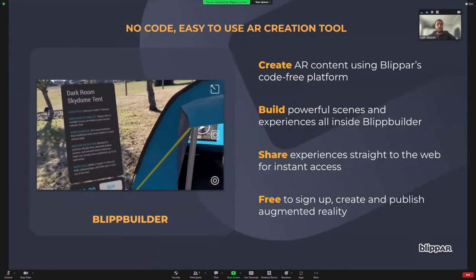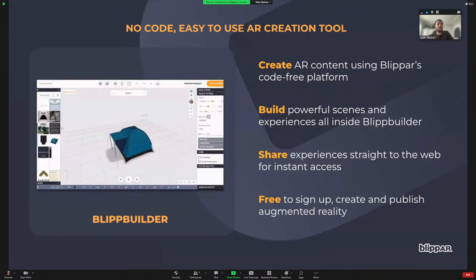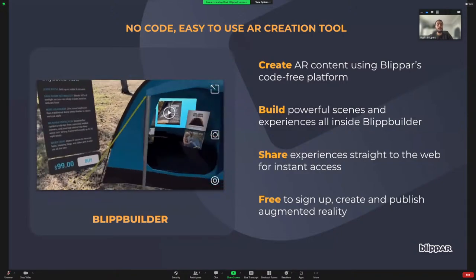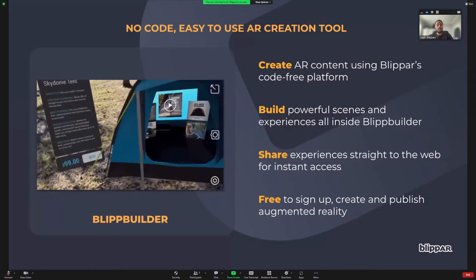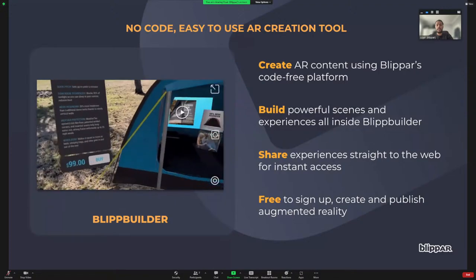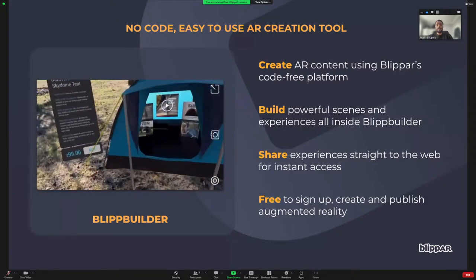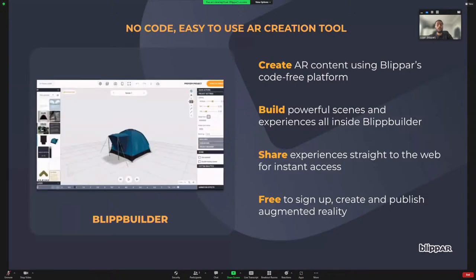Today we want to focus on BlipBuilder, our code-free AR creation platform. It allows anyone to create AR by simply dragging and dropping different elements into a scene. You can then build that scene out to tell an immersive story through animations and effects. Once you've built your content, share it with the world in augmented reality with a single link that works anywhere and is accessible instantly. There are no apps required, and it's completely free to build and publish.